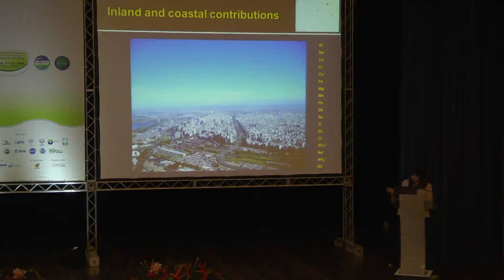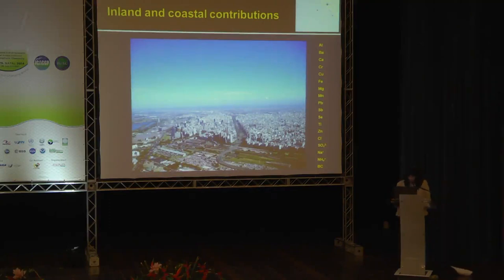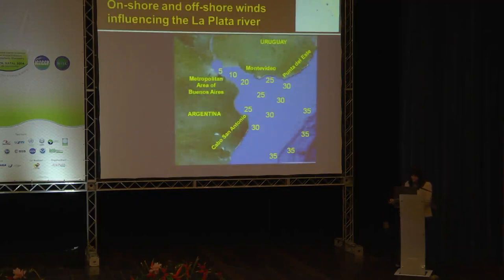Based on the results of spatial and temporal variability, we decided to collect samples during a more extended campaign in time, but only at one site, to obtain a better assessment of temporal variability. In this campaign we obtained fine PM2.5 and coarse samples, determining concentrations of 13 chemical elements in the soluble and residual fractions, four ions in the soluble fraction, and black carbon by reflectometry. We will focus on mass concentration, sea salt presence, and black carbon.